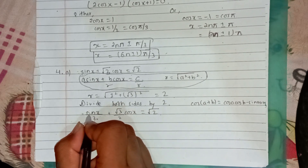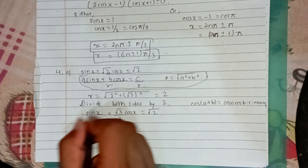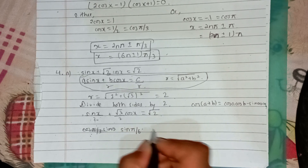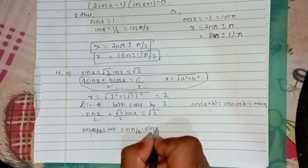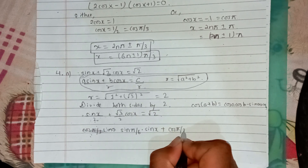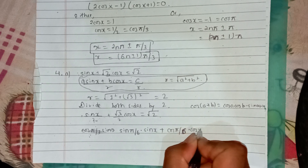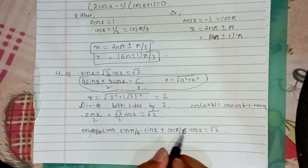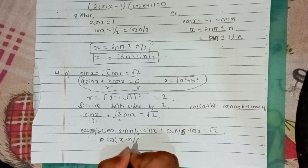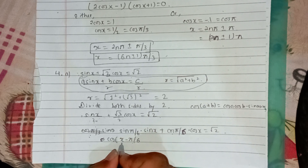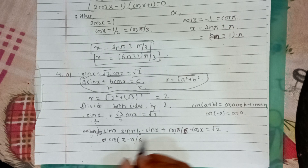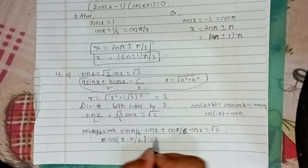So cos a minus b gives us cos a cos b plus sin a sin b. We have cos x minus pi by 6, since cos of pi by 6 equals root 3 by 2 and sin of pi by 6 equals 1 by 2. Cos a minus b and cos b minus a are the same, since cos minus a equals cos a.